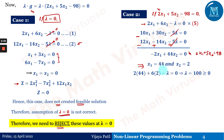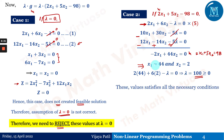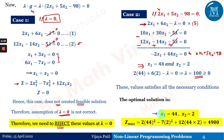Solving gives x₁ = 44 and x₂ = 2. Substituting into the first condition to find λ: 2(44) + 6(2) − λ = 0, so λ = 100, which is positive and satisfies λ ≥ 0. All necessary KKT conditions are satisfied. Therefore, the optimal solution is x₁ = 44, x₂ = 2, and Z_max = 4900.